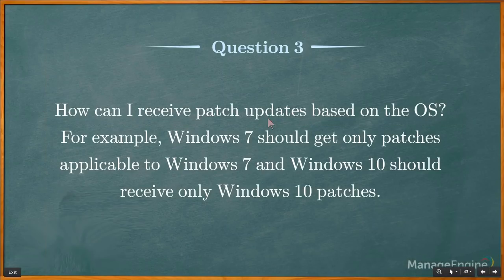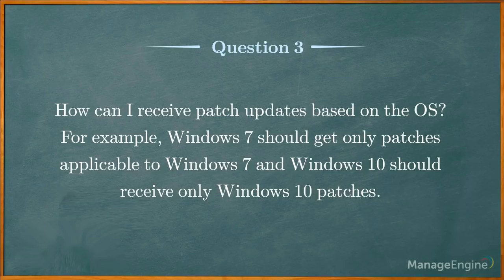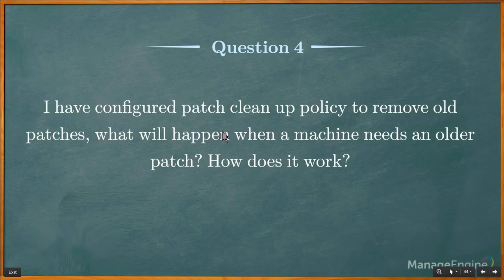How can I receive patch updates based on OS version — for example, Windows 7 should get only Windows 7 patches and Windows 10 only Windows 10 patches? Desktop Central's agent has the intelligence to download only the required patches for each machine — during a scan, the agent updates only the patches required for that specific machine's OS.